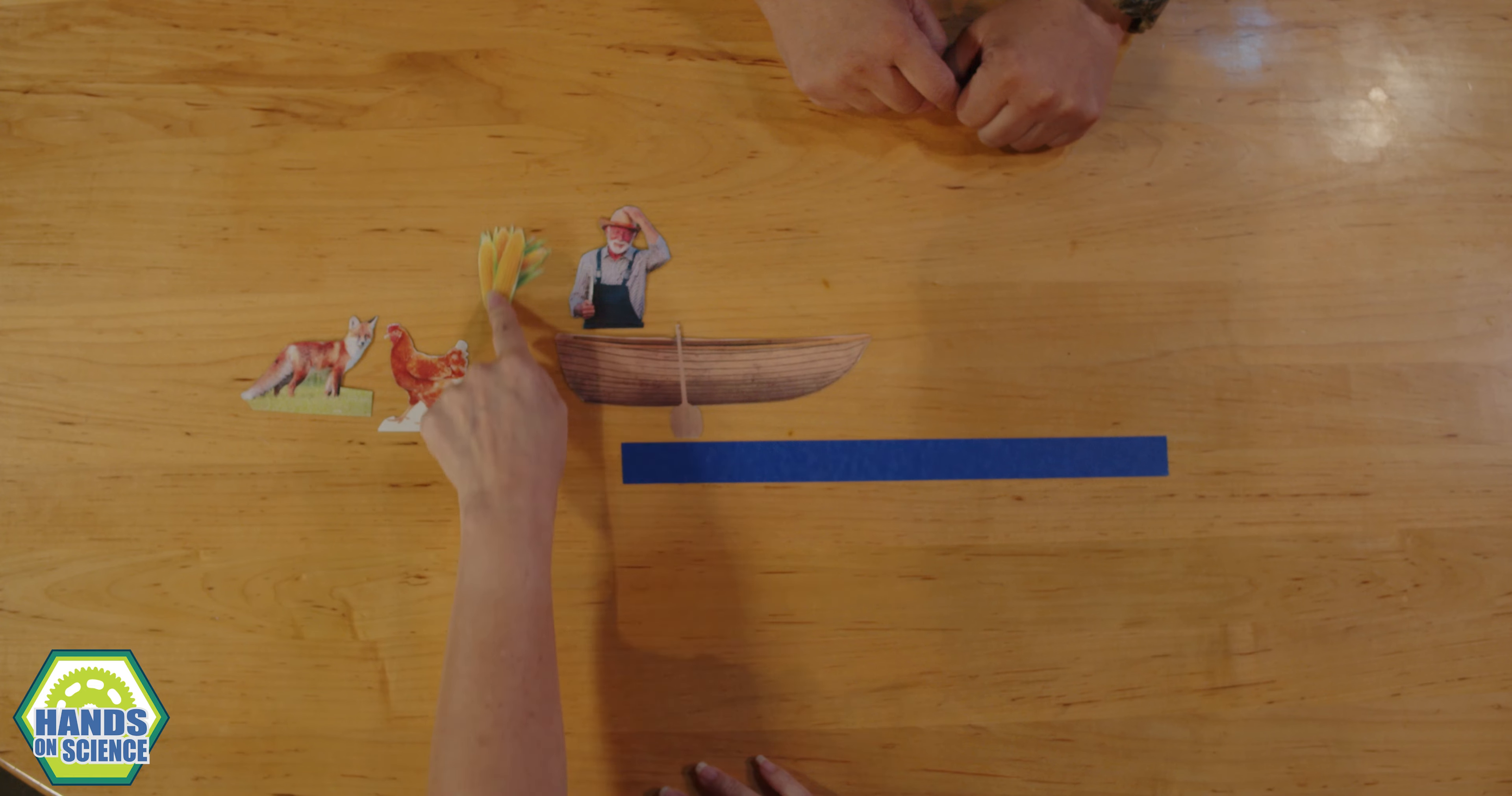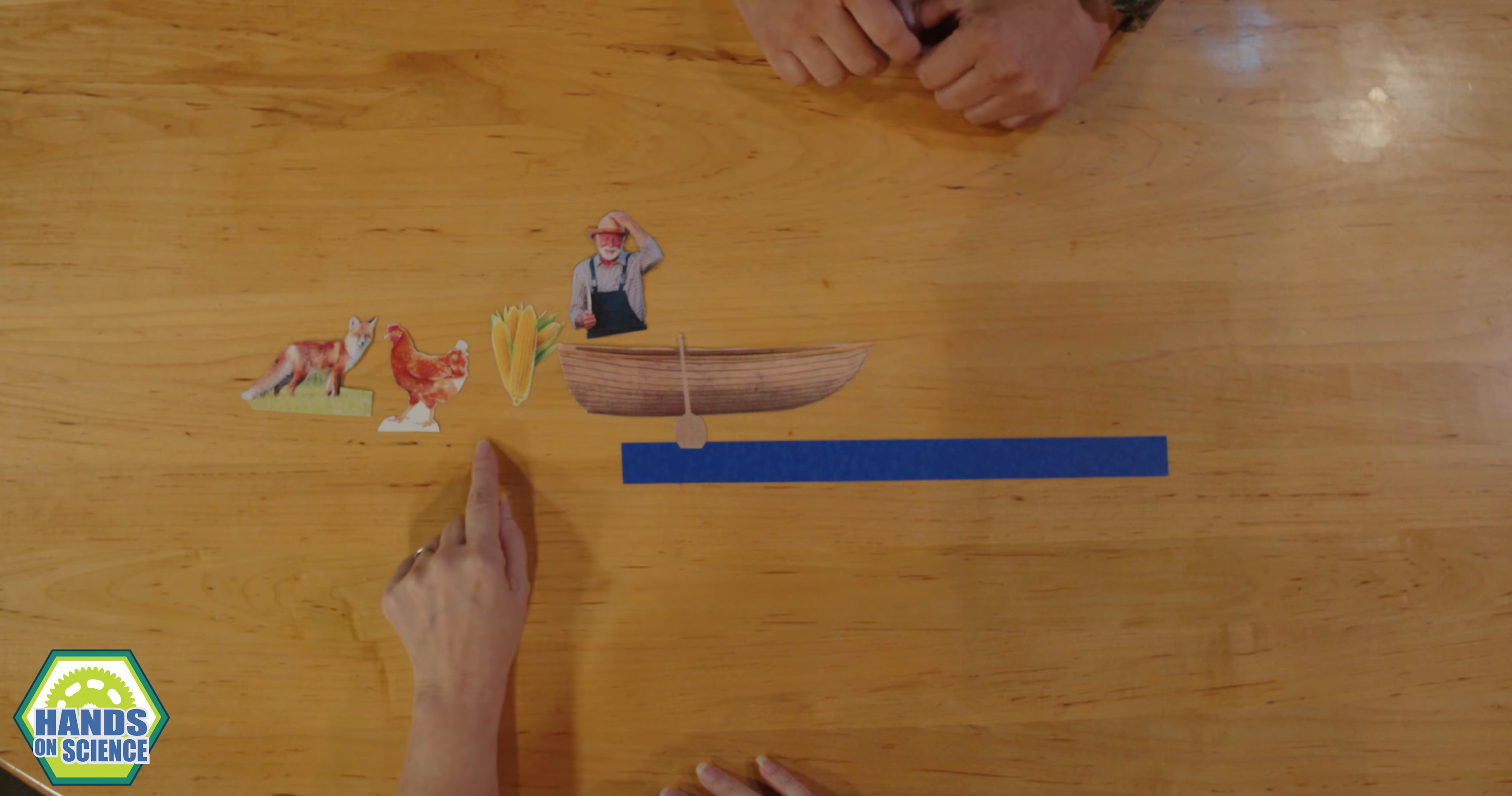If I take the corn... The fox is going to eat the chicken. So we can't do that. So you can't do that. If I have the fox... The chicken is going to eat the corn.